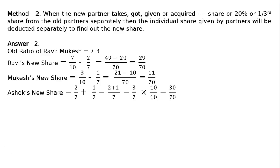Therefore, now we can find the new ratio of Ravi to Mukesh to Ashok is equal to 29 is to 11 is to 30.